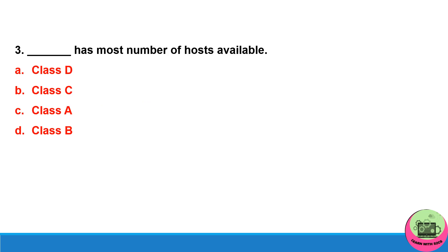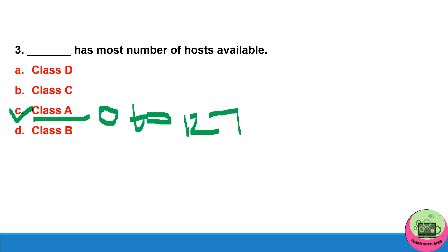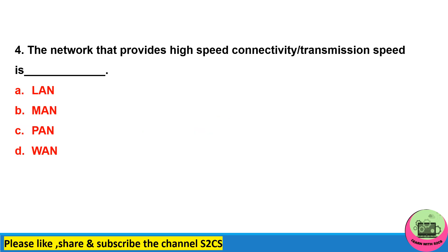Third one: which class has the most number of hosts available? As you know there are five types of classes in IP — A, B, C, D, E — so Class A has the most number of hosts. The address starts from 0 to 127. Next, the network that provides high-speed connectivity or transmission speed is LAN — local area network.